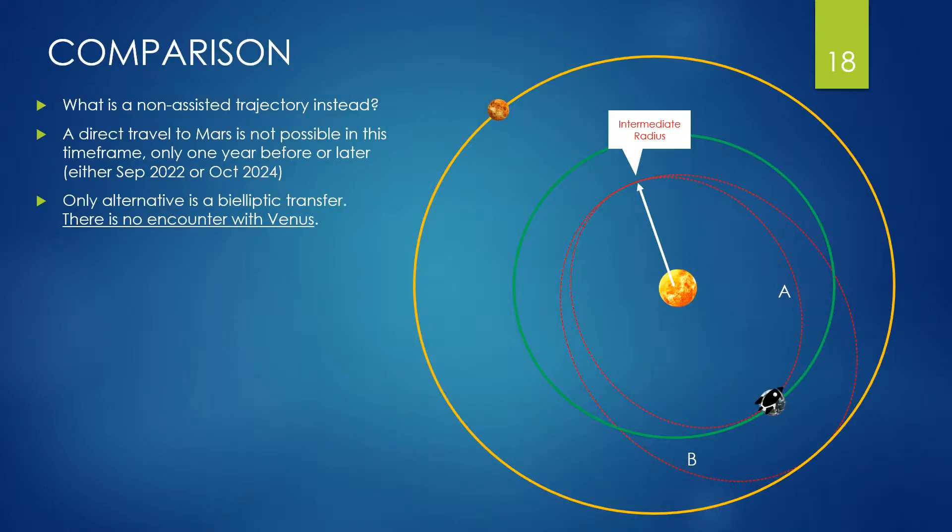If we want to compare this journey with the conventional one, a non-gravity assisted trajectory in other words, what would we take? Just to avoid any confusion, here we cannot travel directly to Mars because close to September 2023 there are no launching windows. We remember that only every 26 months a direct flight is possible, and of course this would be quicker and less expensive. The only alternative we have is a bi-elliptic transfer, and the closest one is happening on 22nd July 2023.